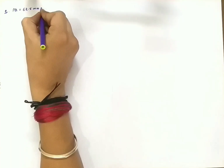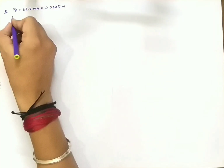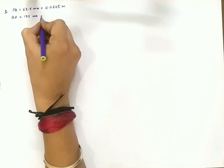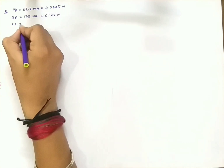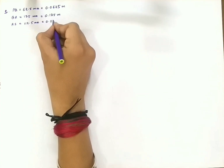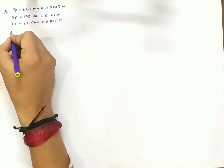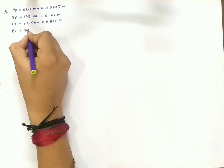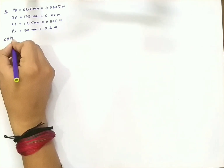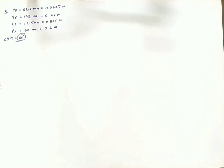This is a four-bar chain, so it has four links and all link lengths are given: PQ, RS, QR, and PS. The condition is given as QPS equal to 60 degrees for this four-bar chain in this position.